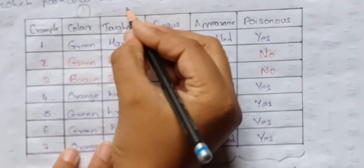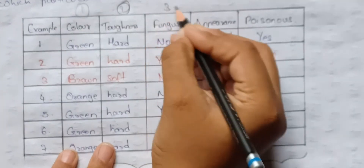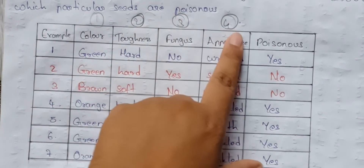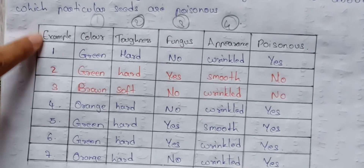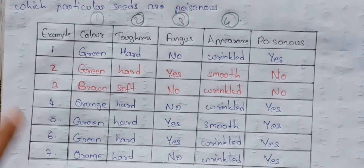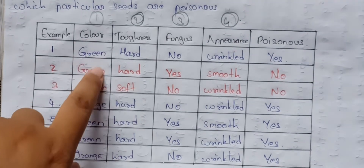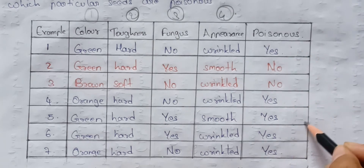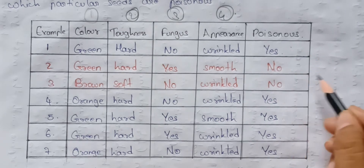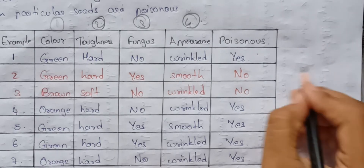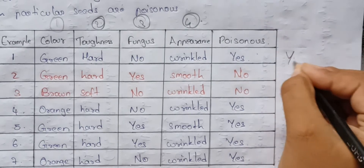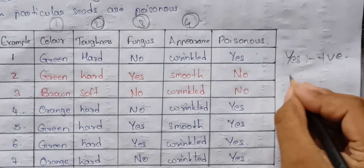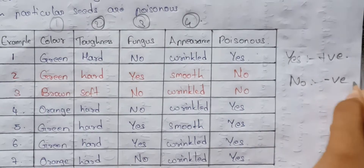The instances have four attributes: color, toughness, fungus, and appearance. There are several examples. In the dataset, blue-highlighted rows are positive examples (yes) and red-highlighted rows are negative examples (no).